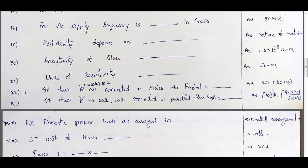If two resistors of 10 ohms and 10 ohms are connected in series, the total resistance equals the sum: 10 + 10 = 20 ohms. If two resistors of 20 ohms and 20 ohms are connected in parallel, total resistance equals R1×R2 by (R1+R2) = 20×20 by 40 = 10 ohms.